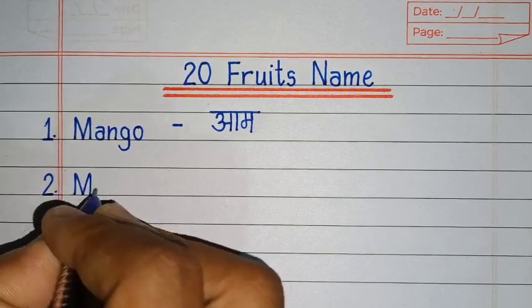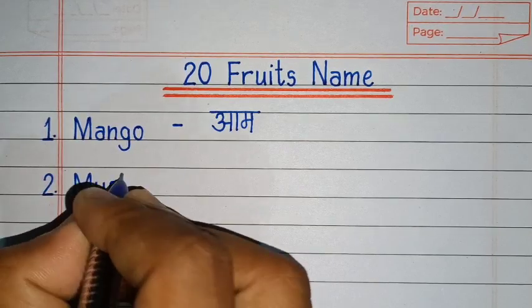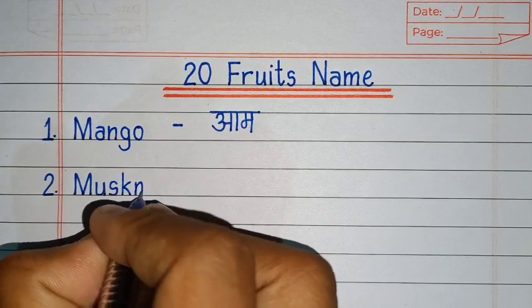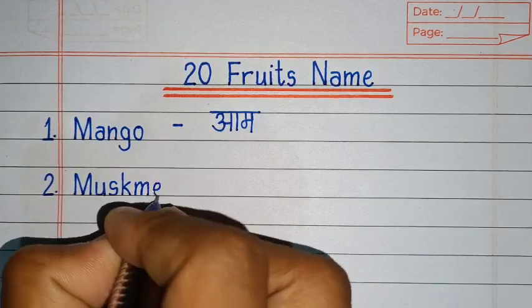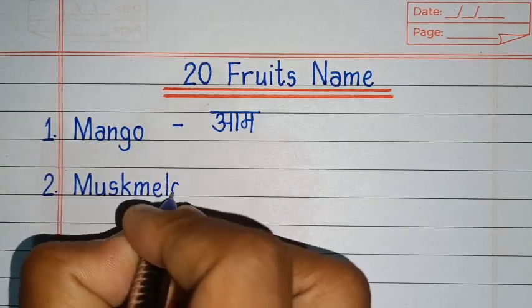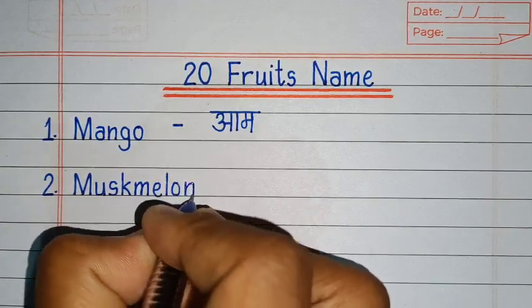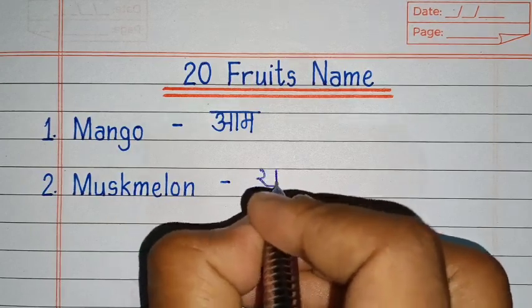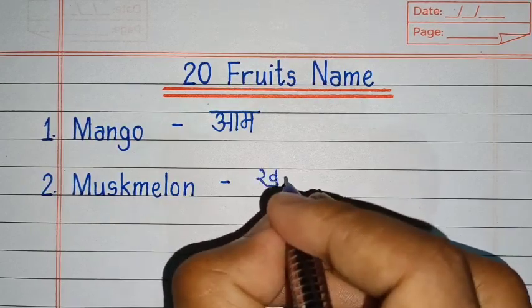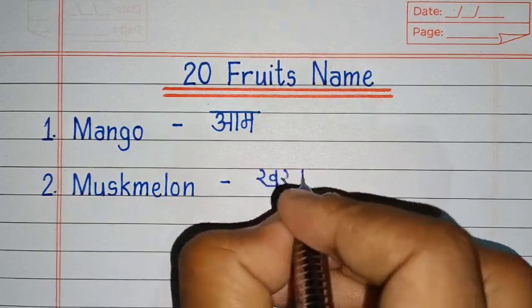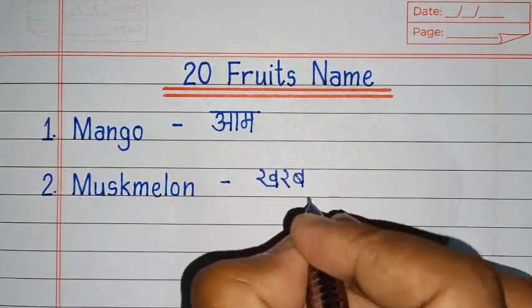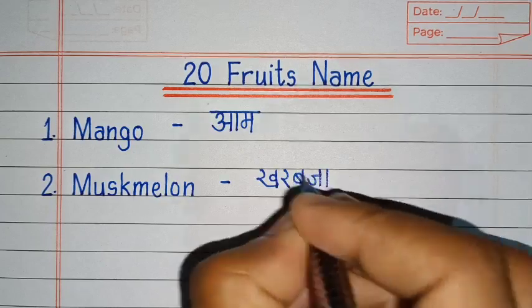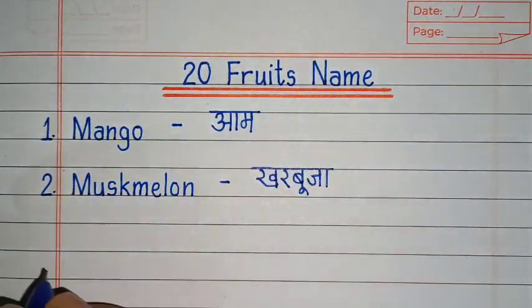M, U, S, K, M, E, L, O, N. Muskmelon. Muskmelon means kharbooja.